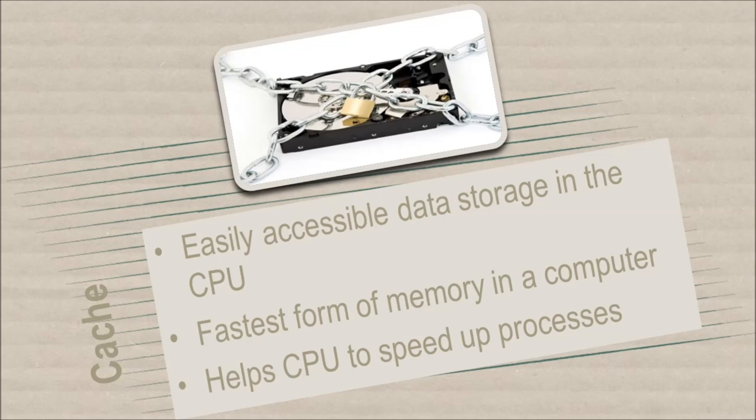If the CPU has to get data from the RAM modules, it will take time. So most CPUs have the cache, which will store data which can be sent faster to the CPU when it needs it. The bigger the cache, the faster the CPU will be at performing tasks.